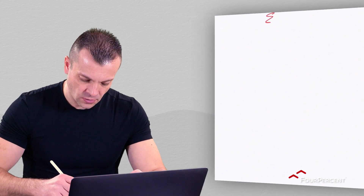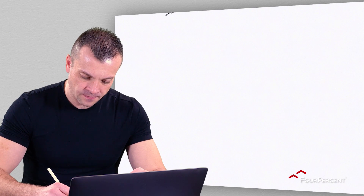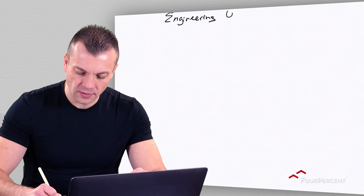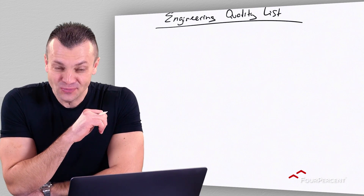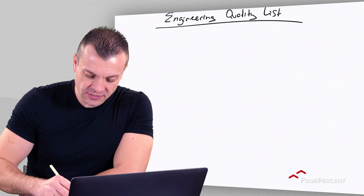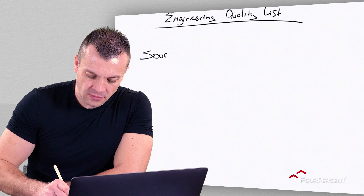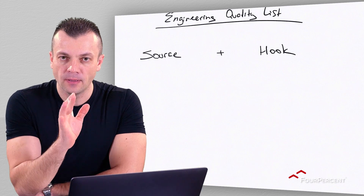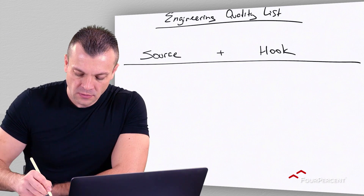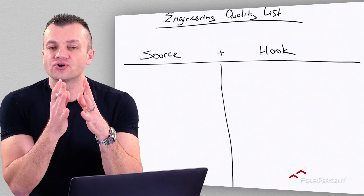So the big question is: how do we engineer this quality list? There is a formula I want to share with you. I call it Engineering Quality — the List Formula 3.0, for 2020 and beyond. It's very simple and consists of two things: Source plus Hook equals Quality. Let me explain what that means.